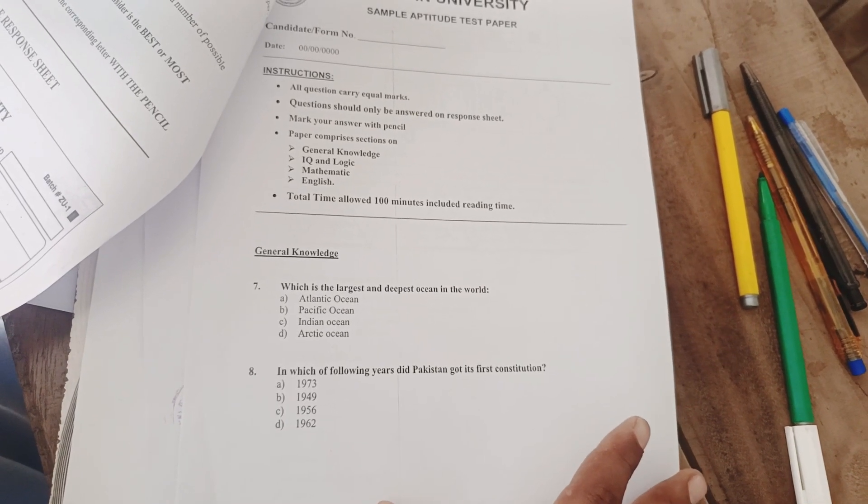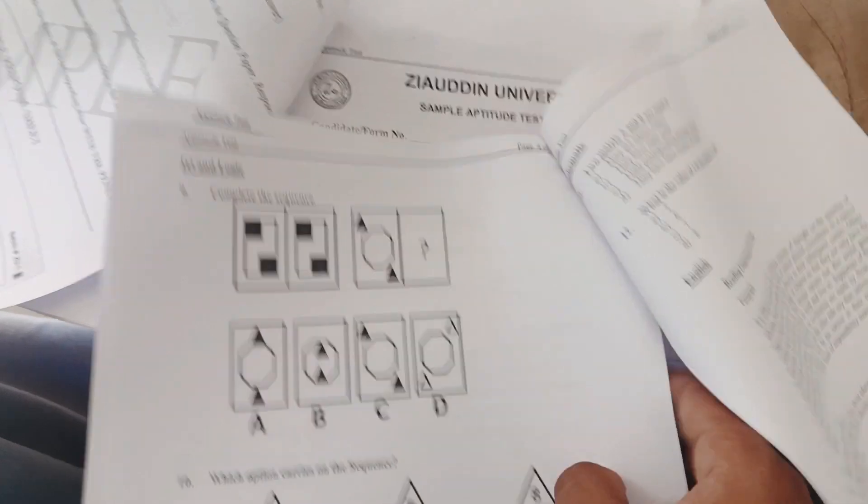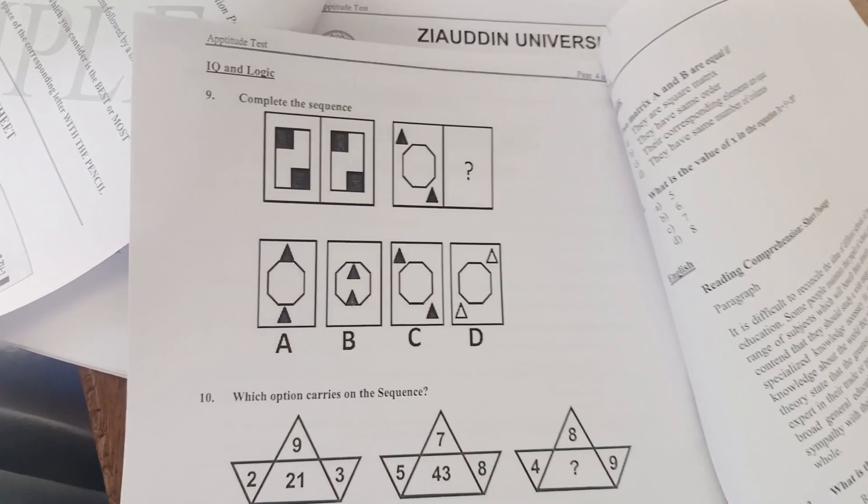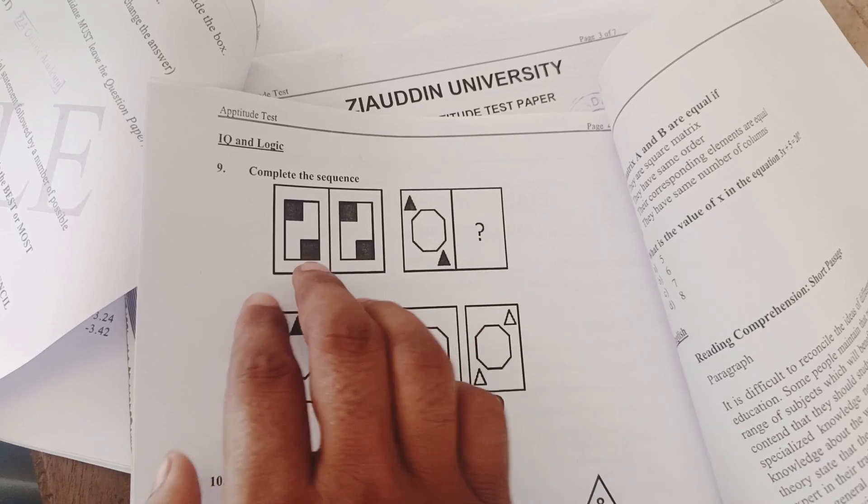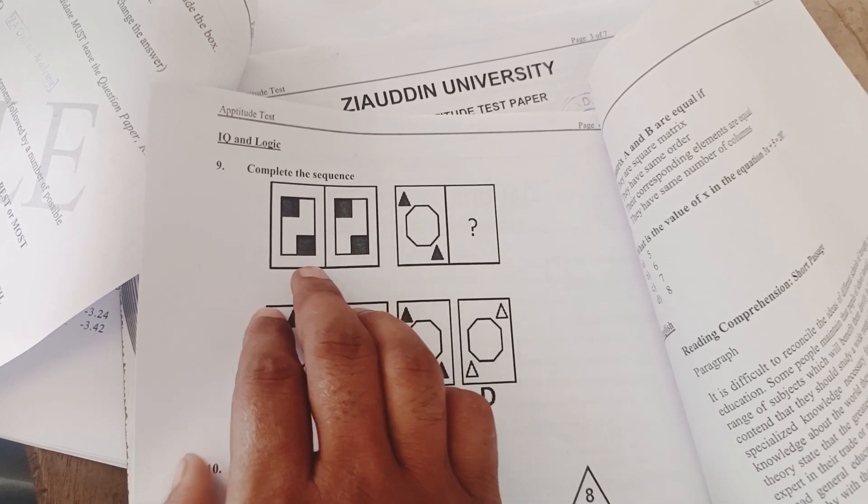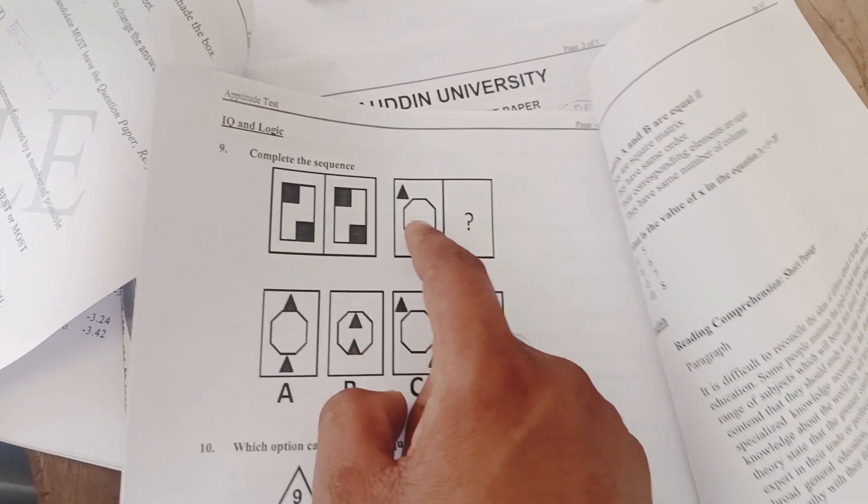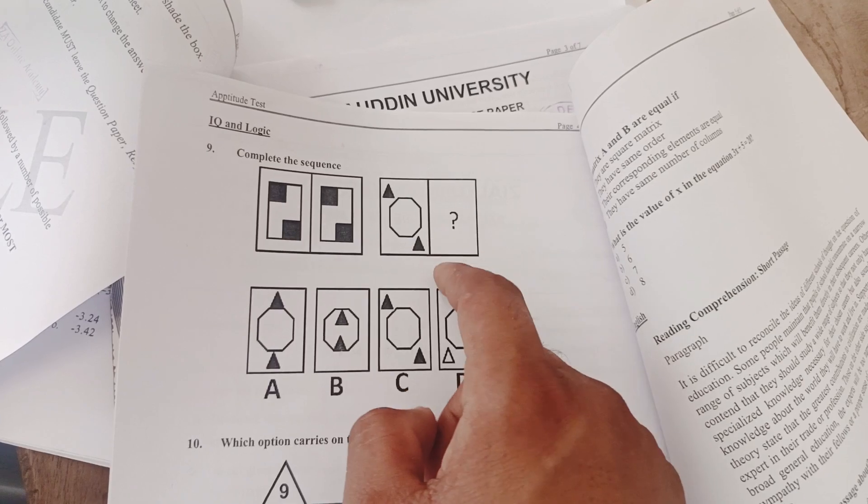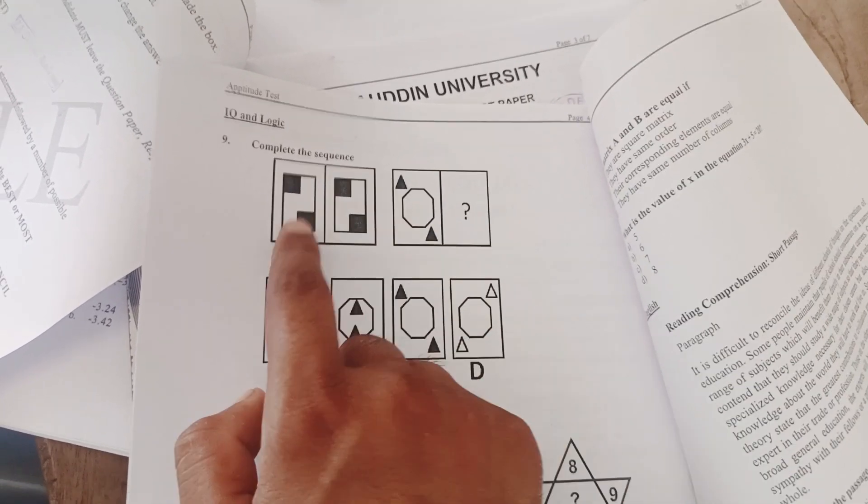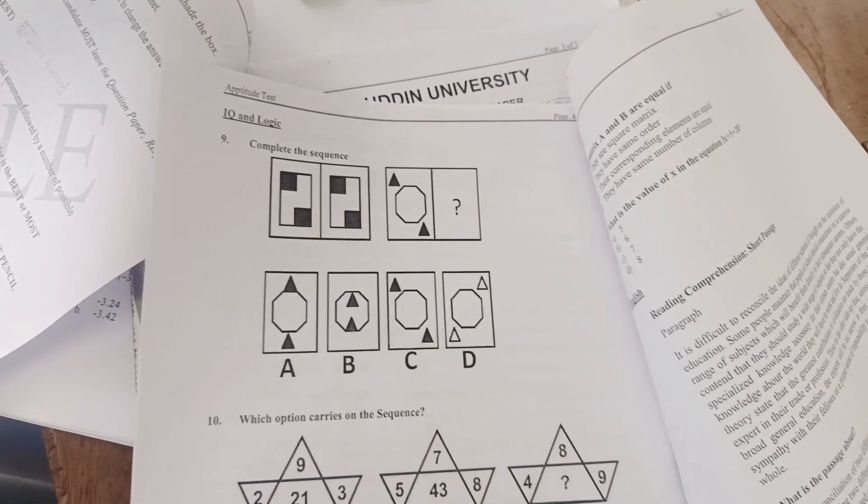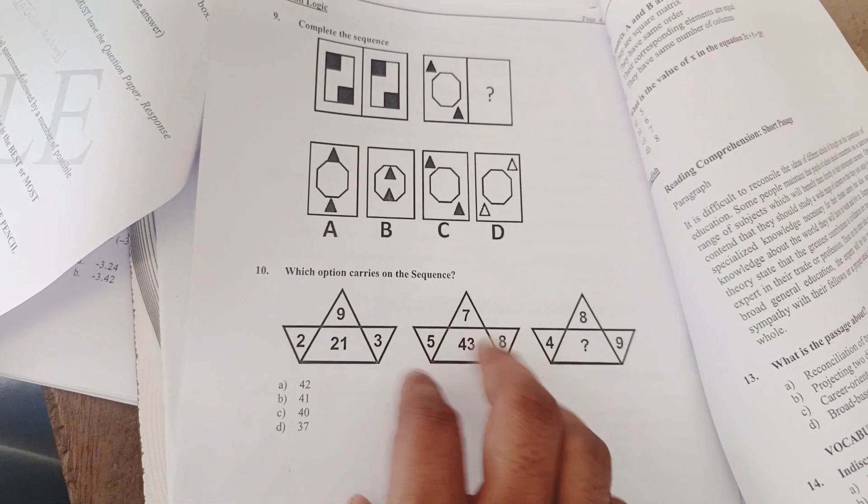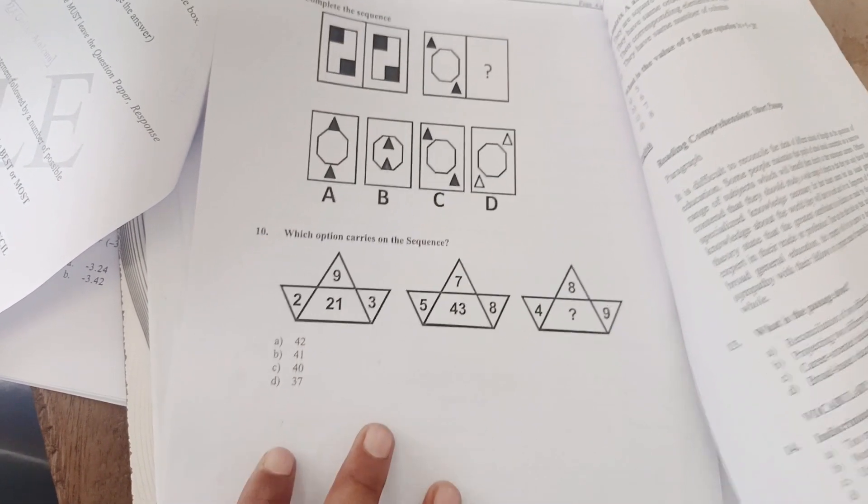This is the logical questions, series questions. These two shapes are related here. Your shapes say a person related a similar pattern. Therefore a similar shape. This is a sequence and series question.